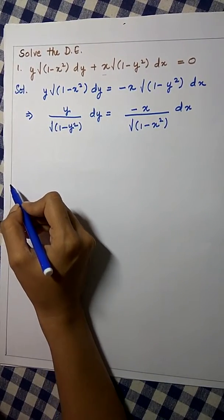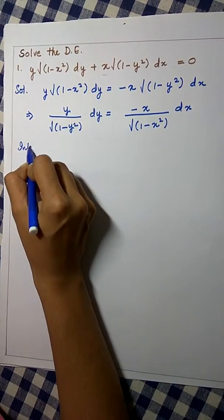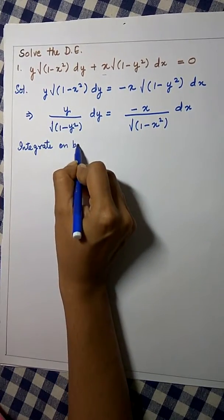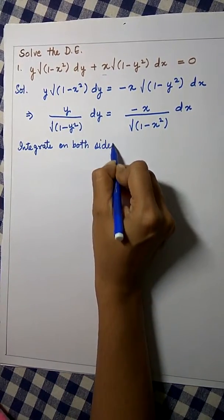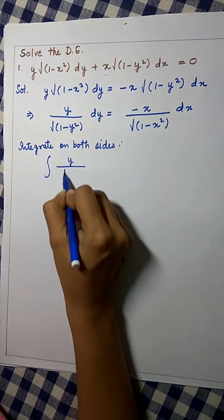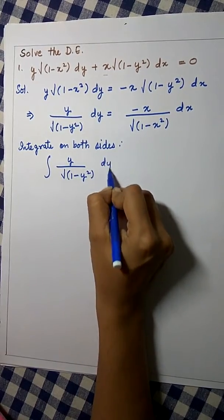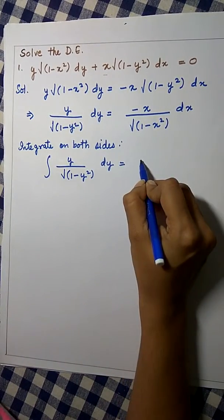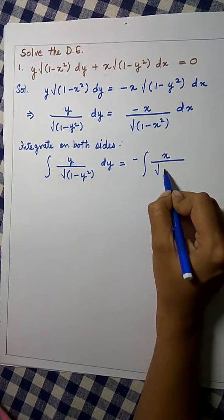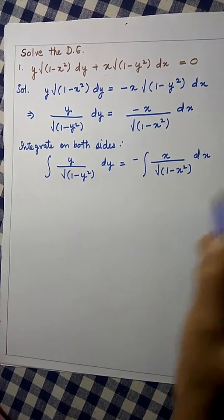Now, we need to integrate on both sides. So, we will get integral of y upon root of 1 minus y square dy, which will be equal to minus integral of x upon root of 1 minus x square dx.